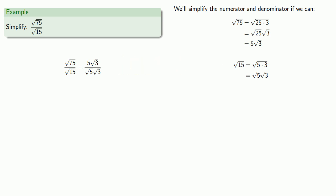But now the numerator and denominator have a common factor — square root of 3 — so we can remove that common factor and get our simplified form.